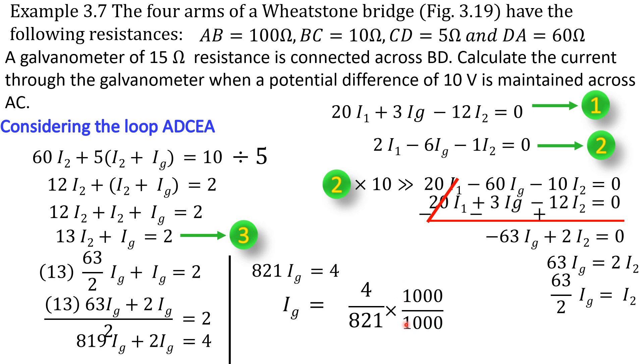Multiplying both the numerator and denominator by 1000, we get 4000 divided by 821 into 1000. 4000 by 821 is 4.87. That is 4.87 divided by 1000. So we can say 4.87 milliampere. So 4.87 milliampere current is flowing through the galvanometer. This is the answer. Thank you for watching.